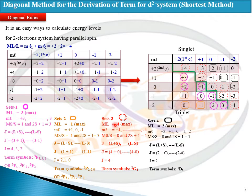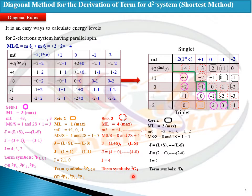Set three: the ML value is four and it lies above the diagonal, so it will definitely be a singlet. ML is four, MS is zero, so spin multiplicity is one (singlet). The J value is L plus S, which is four plus zero, giving four. The term symbol will be ¹G₄.